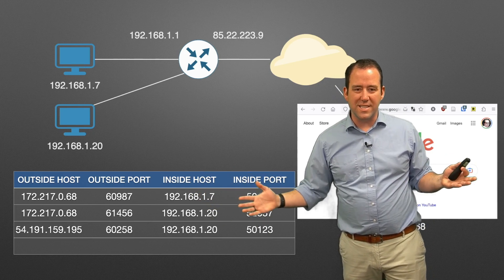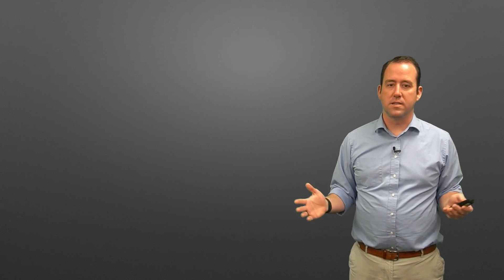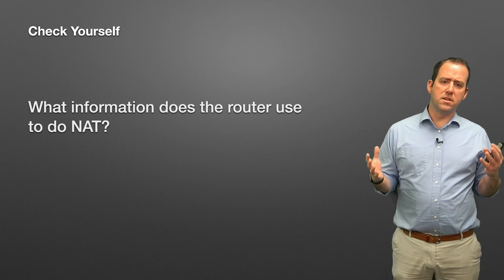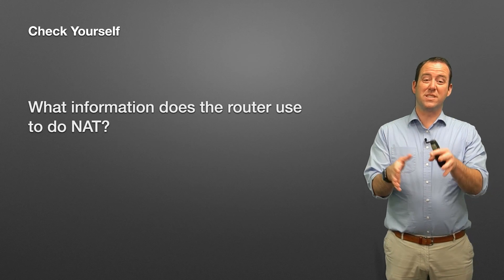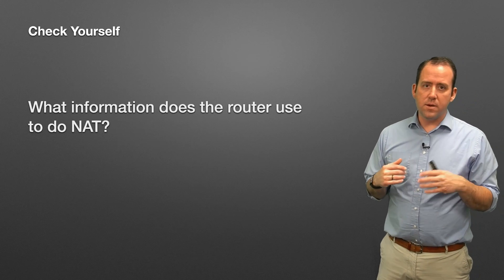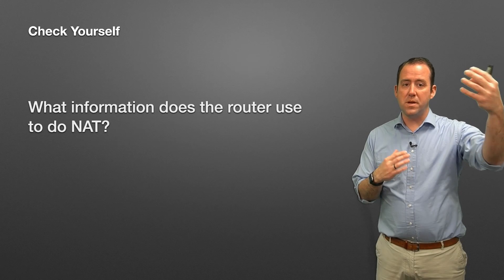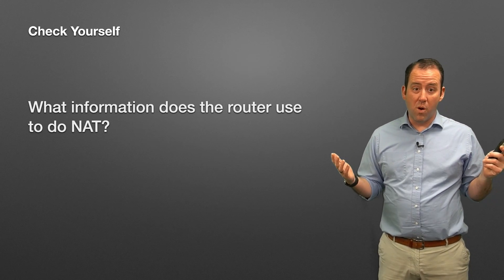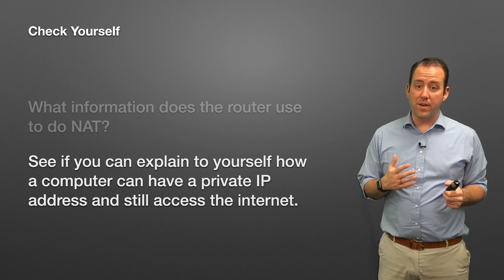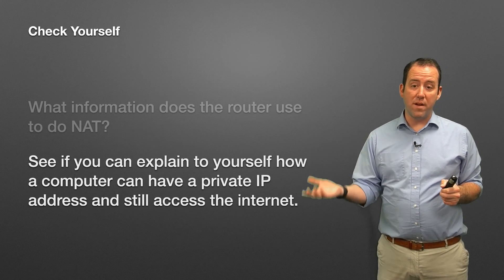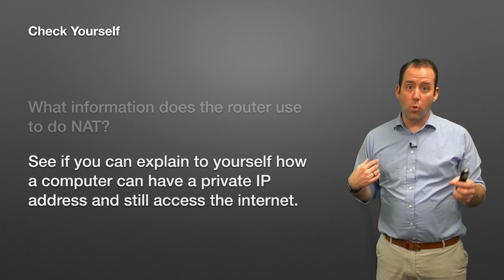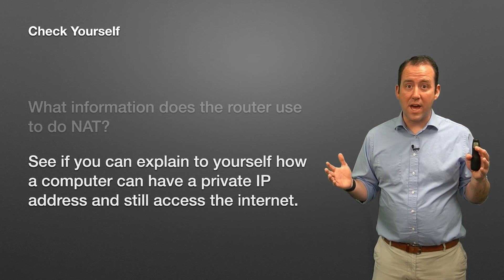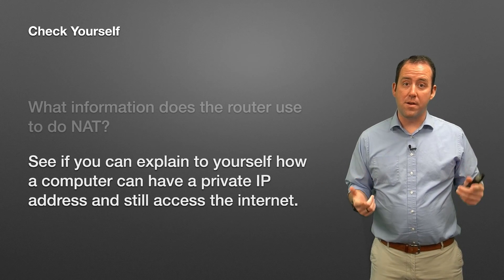Check yourself: can you explain what information the router uses to do NAT - specifically NAT overloading or port address translation - that allows one public IP address to serve multiple private IP addresses on the inside? More generally, can you explain how a computer with a private IP address can still access the internet? What has to happen? If you can answer those questions, you have a pretty good handle on how network address translation works.